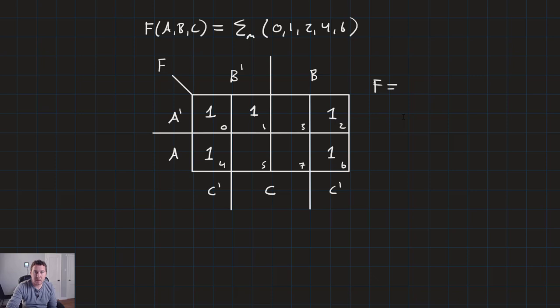So now set up our solution. F is equal to something. And we go hunting for our answers. Now, like we talked about before, 2 and 0 are adjacent as are 4 and 6. So what we can do is we can actually create a term that sort of combines all four of these, just like that. And so we'll see that it splits the A' and A, splits the B and B', but it fits in the little C' edges here. So this term is equal to C'.